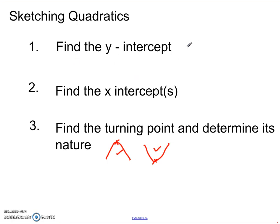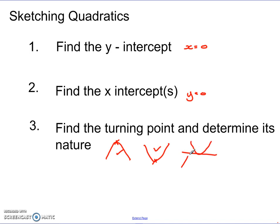To find the y-intercept, you set x equal to 0 and substitute into the function. To find the x-intercepts, you set y equal to 0, giving a quadratic equal to 0, and solve it. For the turning point, you find the midpoint of the x-intercepts and substitute that value in to get the y-coordinate. Sometimes you'd get only one x-intercept, meaning the curve just touches the x-axis.